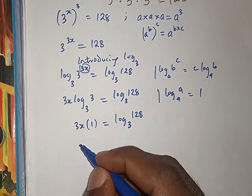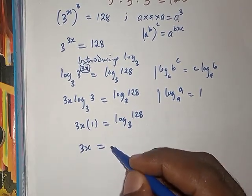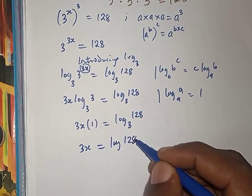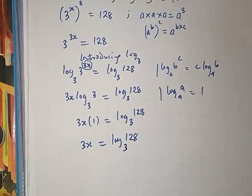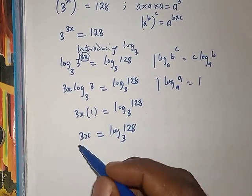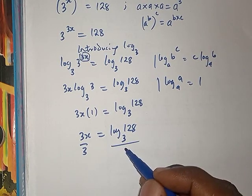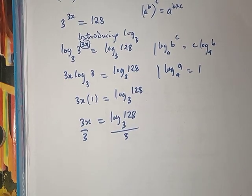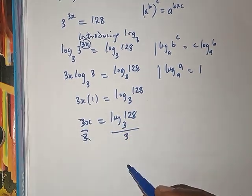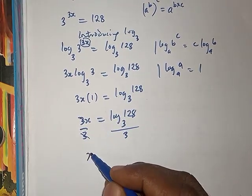From there, the next thing we are going to do is we have 3x equals log base 3 of 128, so we try to divide both sides by 3. We divide both sides by 3. This we cancel, then we have x equals...